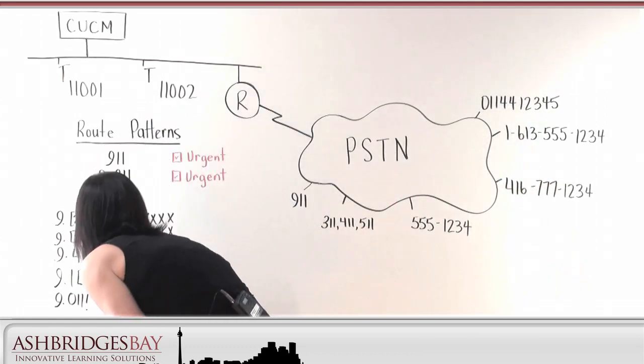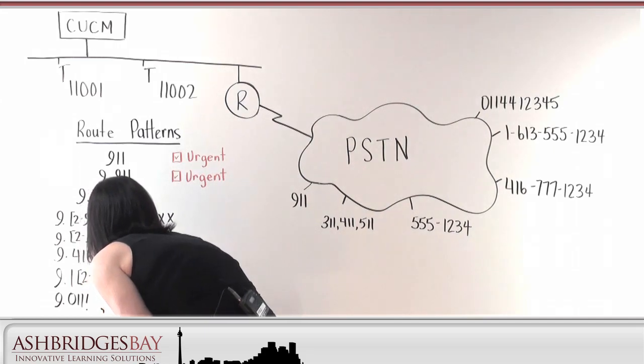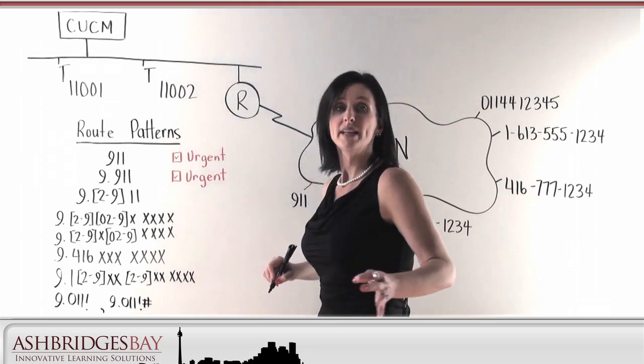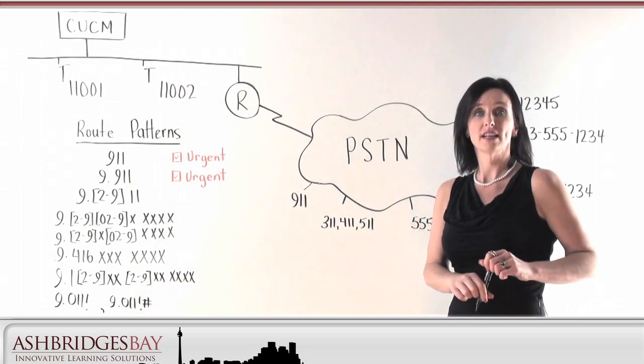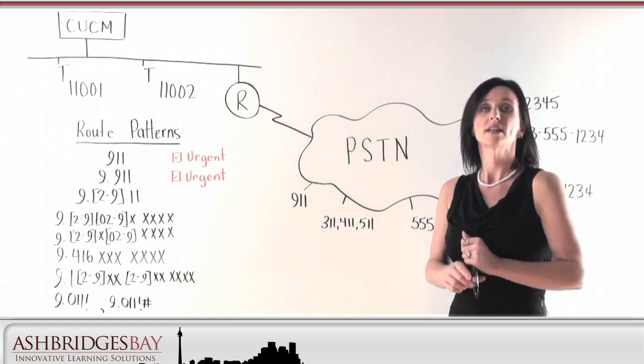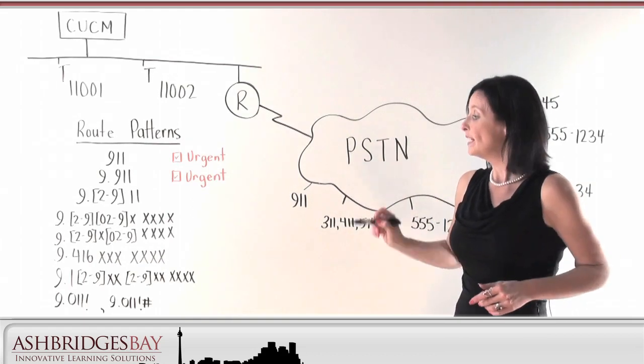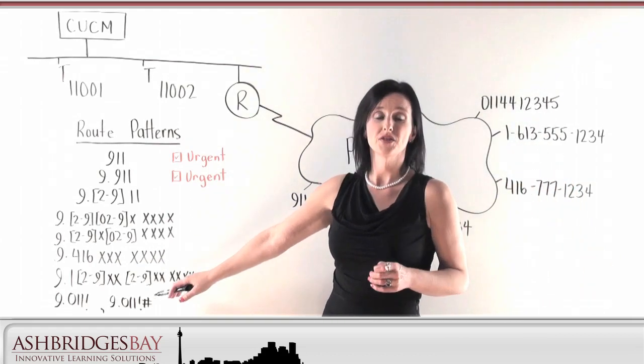So I'm going to put in another pattern, 9-0-1-1, exclamation mark, pound. And pound means I'm done dialing. So the call manager says you're done dialing, route that call out, and I won't have to wait. We need to put both of these patterns into the call manager.